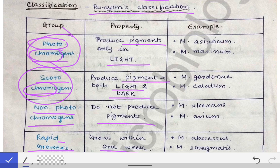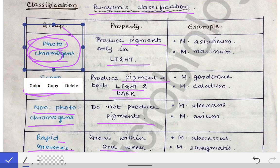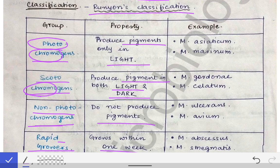For remembering photochromogen examples: Mycobacterium asiaticum and Mycobacterium marinum. The mnemonic is that people go to the marine beaches of Asia to take photos. Marine beach means 'marinum,' beaches of Asia means 'asiaticum,' and 'photo' means photochromogen. So photochromogens are M. asiaticum and M. marinum.